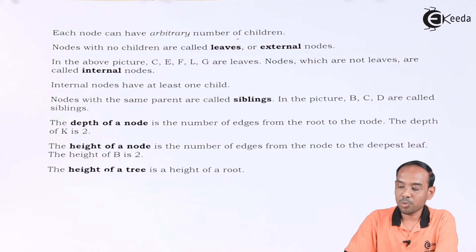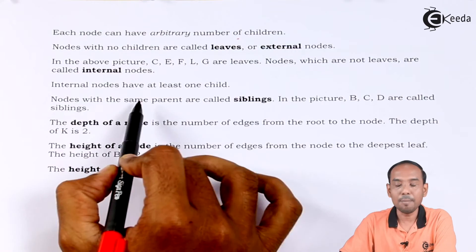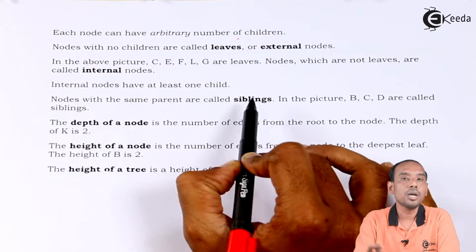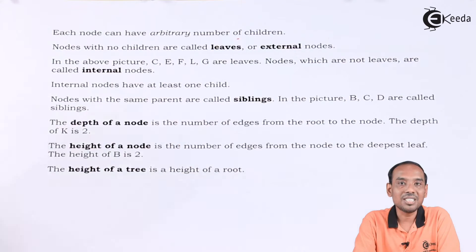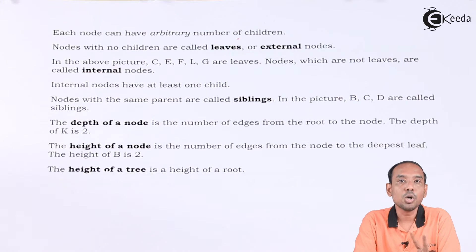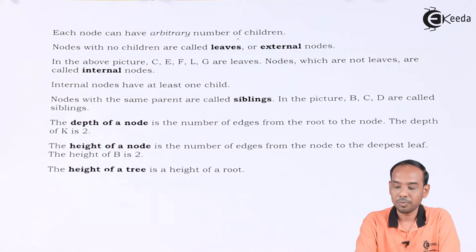The nodes with the same parent are called siblings. Two children of the same parent are considered to be siblings.